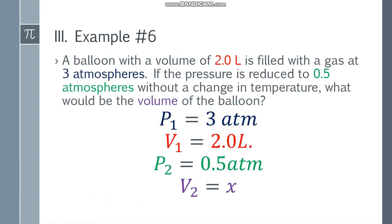Example number 6. A balloon with a volume of 2.0 liters is filled with a gas at 3 atm. If the pressure is reduced to 0.5 atm without a change in temperature, what would be the volume of the balloon? Although temperature is stated in the problem, we will still use Boyle's Law because we do not incorporate temperature into the equation. So let's identify the initial pressure: 3 atm.